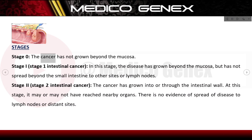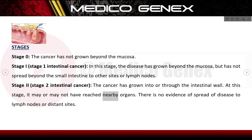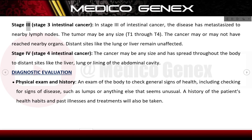Stage 0: the cancer has not grown beyond the mucosa. Stage 1: the disease has grown beyond the mucosa but has not spread beyond the small intestine to other sites or lymph nodes. Stage 2: the cancer has grown into or through the intestinal wall and may or may not have reached nearby organs, with no evidence of spread to lymph nodes or distant sites. Stage 3: the disease has metastasized to nearby lymph nodes; the tumor may be any size (T1 through T4) and may or may not have reached nearby organs, while distant sites like the lung or liver remain unaffected.